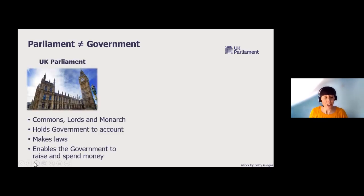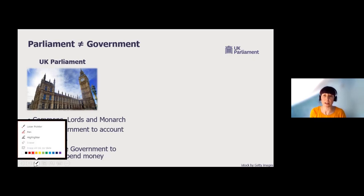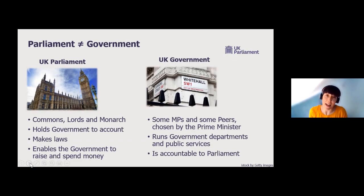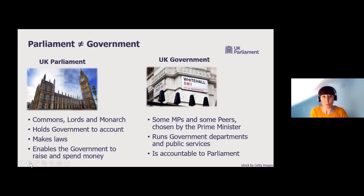Parliament is the House of Commons, our MPs, the House of Lords, peers, and the Queen is officially a part of parliament as well. Parliament's role is to hold government to account, to make and pass legislation, and to check and approve government spending proposals - to enable the government to raise and spend money. Government, on the other hand - the executive - is some MPs and some members of the House of Lords who've been chosen by the Prime Minister to be ministers, to run government departments and public services.